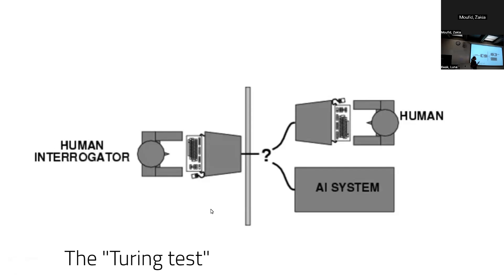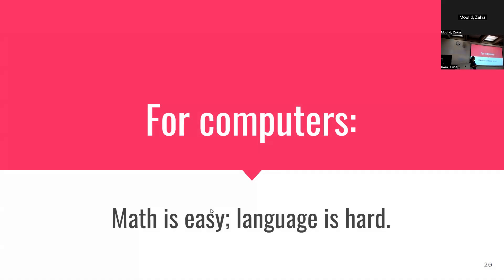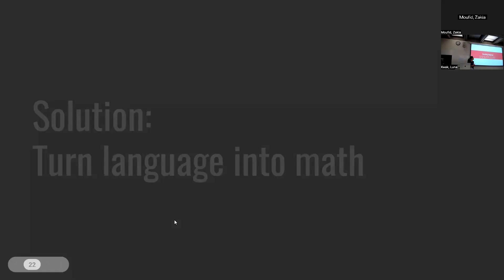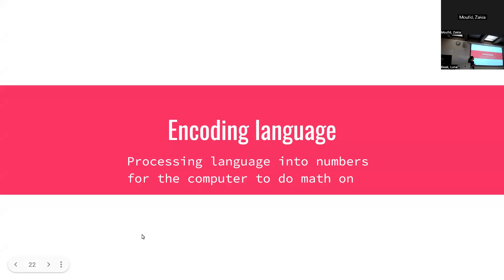The Turing test is based on a Victorian parlor game: you have a human interrogator, and on the other side a human and an AI system. The human interrogator tries to guess based on information passed back and forth whether what they're receiving is from an AI or a human — you might think of this now as like Turnitin's AI detector. Interestingly, if you dive into the article, he's actually talking about detecting gender, not just the difference between human and AI. At this time especially, math was easy for computers and language was hard — computers had no way of encoding words at all.